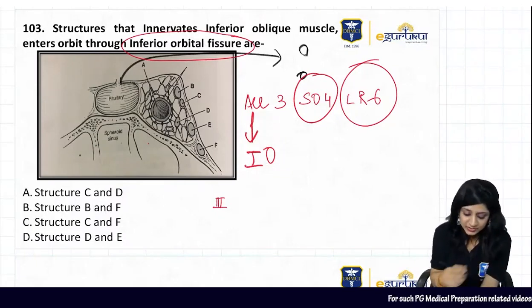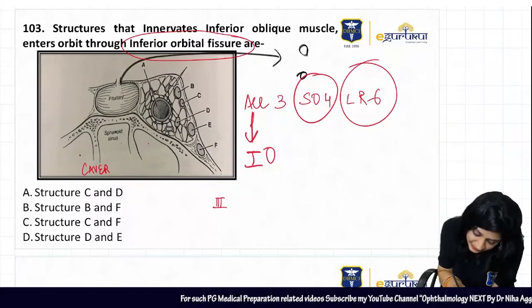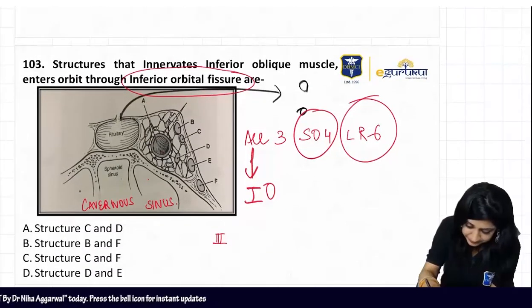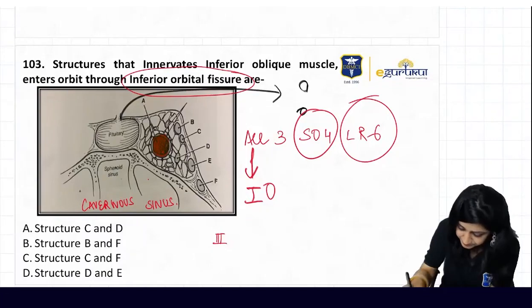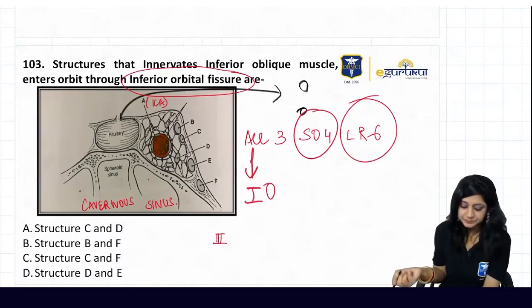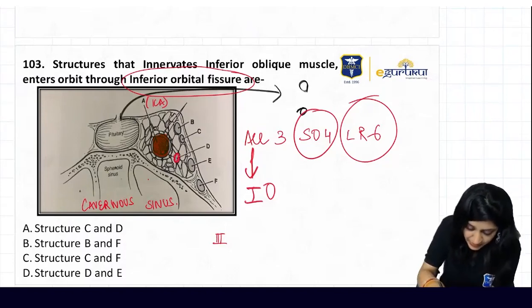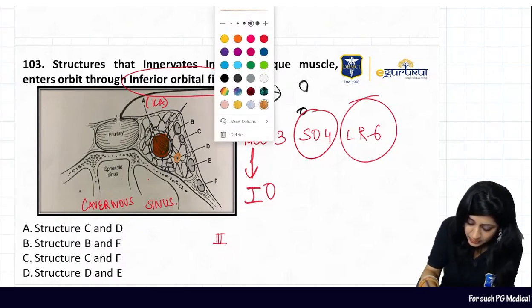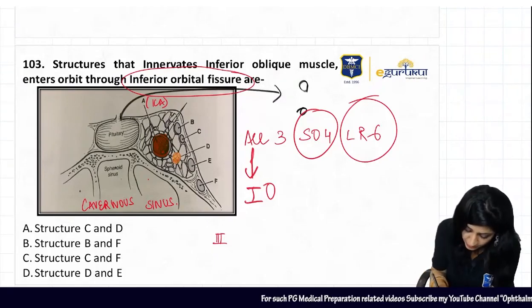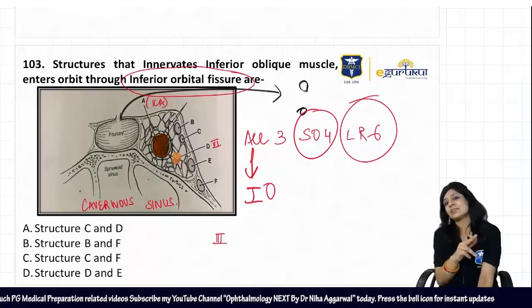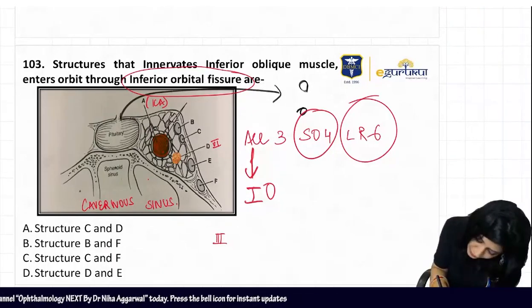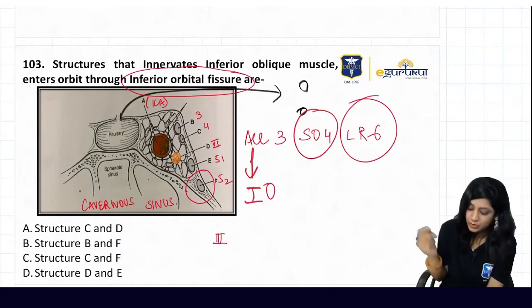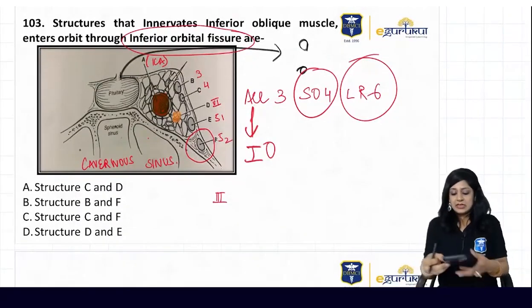This is actually the cavernous sinus. So if you see, this is your center. So this is structure one - this is your internal carotid artery. And this one, which is - it should not be red actually, it should be yellow, but yellow will not be visible so I am making it brown. So this structure is actually your sixth nerve, center. Internal carotid artery and sixth nerve. And then lateral wall - third, fourth, fifth one, fifth two. So can you see this is your inferior orbital fissure?